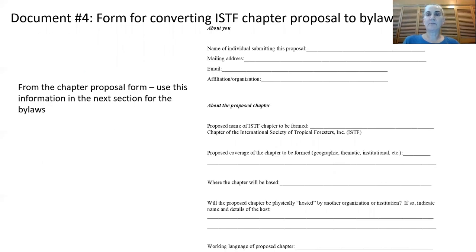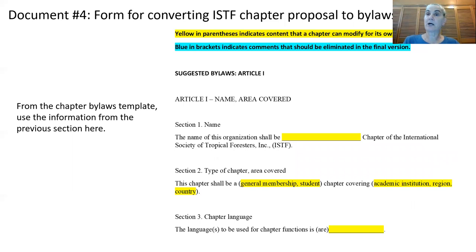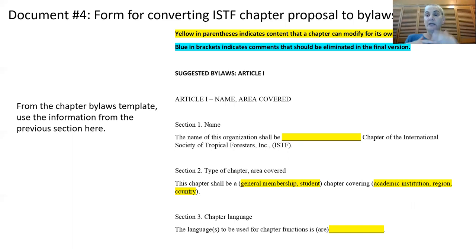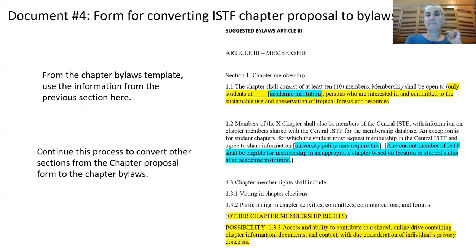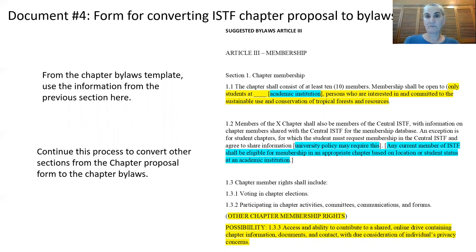Here are a couple of pieces from the chapter proposal form with information about you and the proposed chapter. That information goes into article one of the bylaws template. That's what the form looks like — a piece of the proposal followed by the corresponding piece of the bylaws template, and you just move the information from one to the other. Another example is about membership — the information from the proposal goes into article three on membership. You step through the other sections from the proposal form to the bylaws template, as indicated, piece by piece in this conversion form.